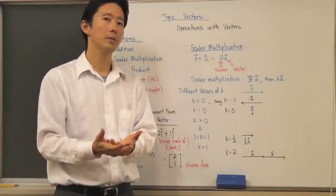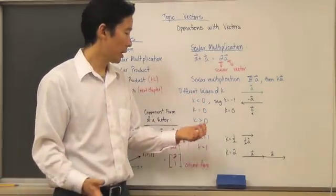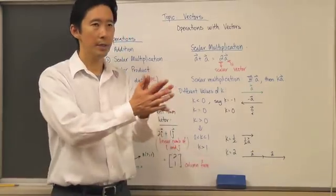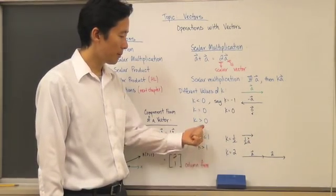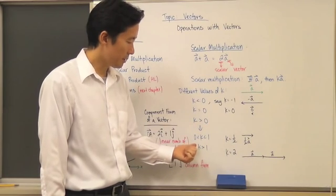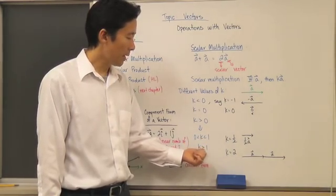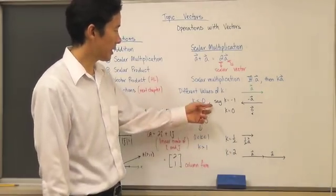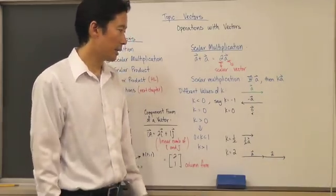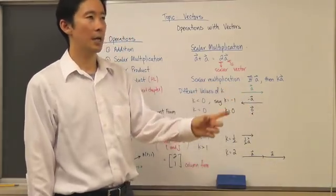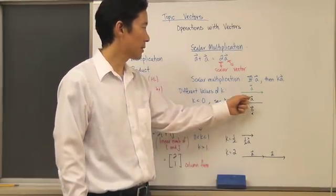k could be negative, zero, or positive — those cover all the different numbers we have. We also want to look more in depth at what happens for values greater than zero: what happens between zero and one, and what happens when k is greater than one. For example, when k equals negative one, we get a vector with the same magnitude but the exact opposite direction.